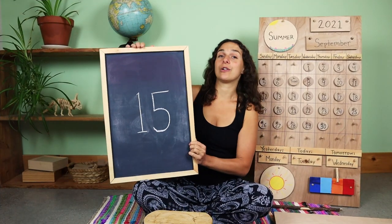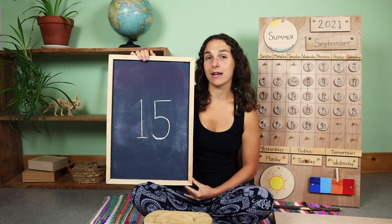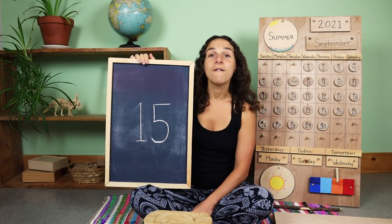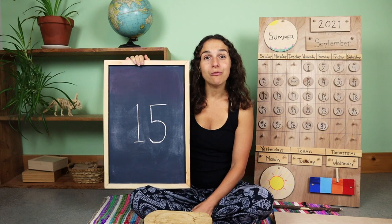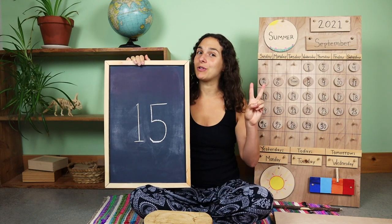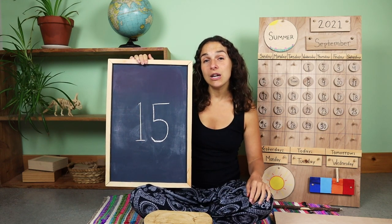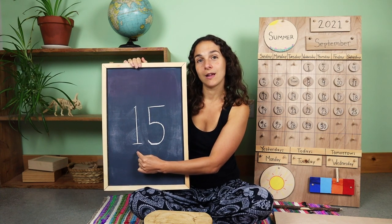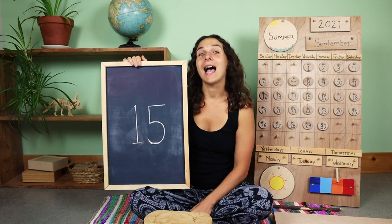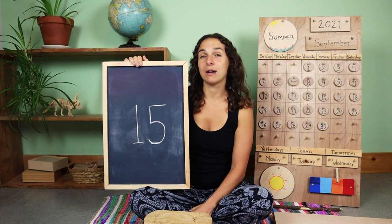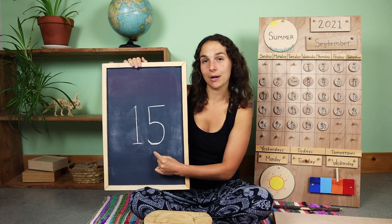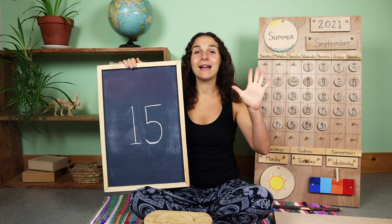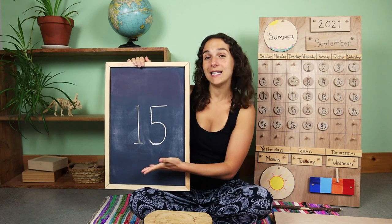Yesterday we also learned a new number of the week. This is the double-digit number 15. When you write the number 15, you have to write two numbers. Can you show me with your fingers what number you write first? One. After you write the number one, you write this number — five. One, five. Fifteen.